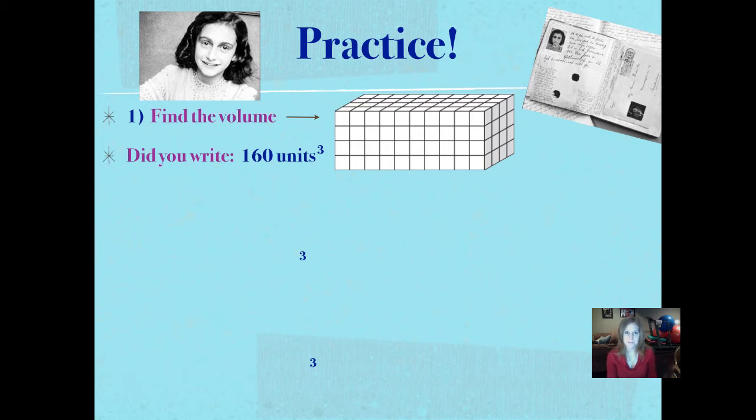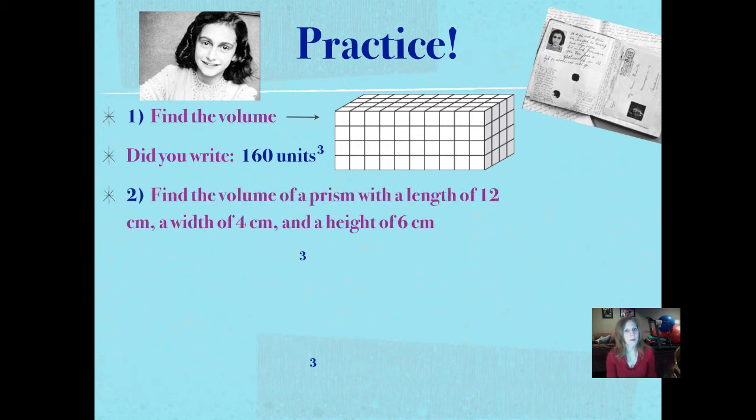Let's try another one. We don't have anything to count in this one. We're going to have to use the formula. Find the volume of a prism with a length of 12 centimeters, a width of 4 centimeters, and a height of 6 centimeters. Pause it and push play when you're ready. Don't forget to write out that formula. Did you write 288 cubic centimeters? 12 times 4 times 6 is 288 cubic centimeters.